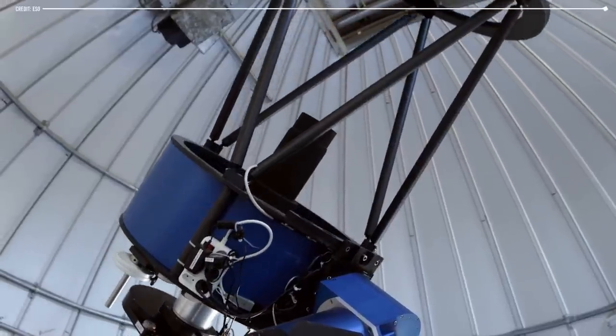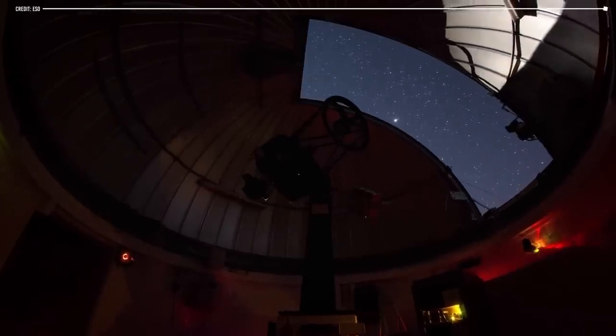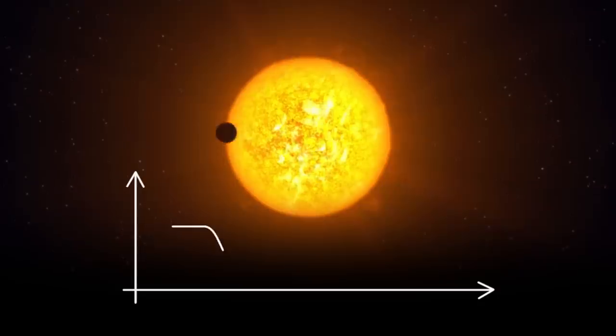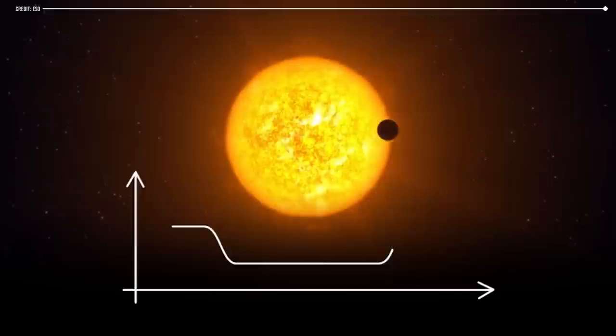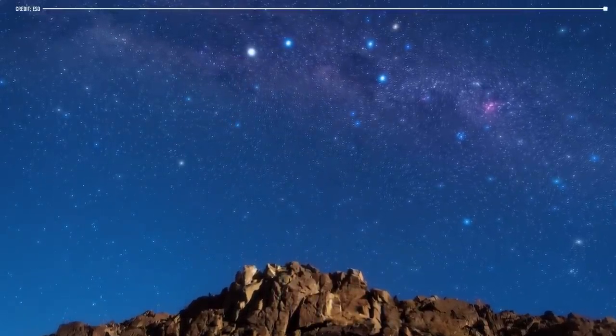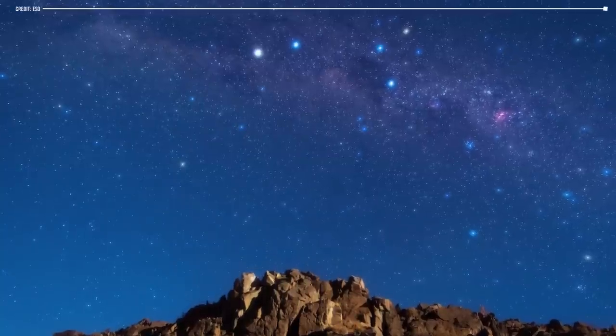In the years that followed, astronomers continued to study Barnard's star using a variety of techniques, including radial velocity measurements and photometry. These studies provided valuable insights into the properties of this star and helped scientists better understand red dwarf stars as a whole.